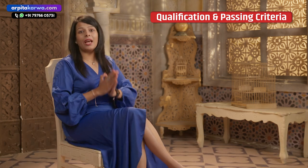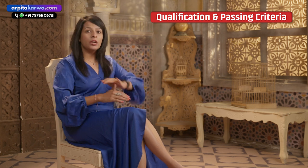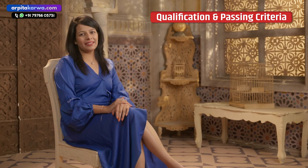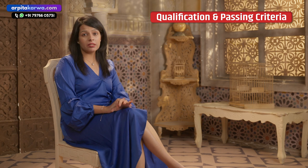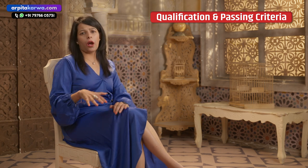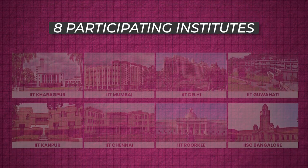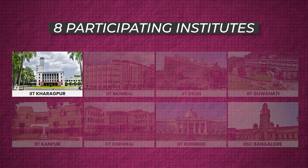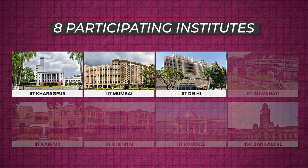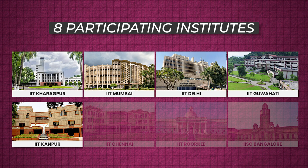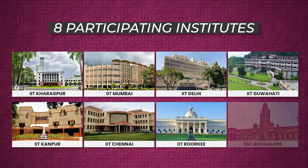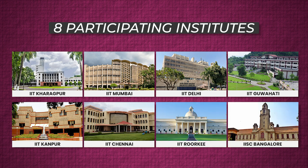If you have command over the basics, you're good to go. Let's now talk about the participating institutes. As of now, there are eight participating institutes: IIT Kharagpur, IIT Bombay, IIT Delhi, IIT Guwahati, IIT Kanpur, IIT Chennai, IIT Roorkee, and IISC Bangalore, which is the Indian Institute of Science Bangalore. So there are eight institutes in total — seven IITs and one IISC.